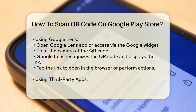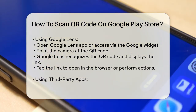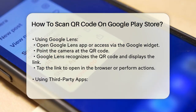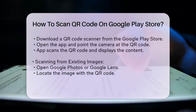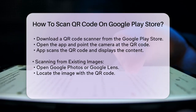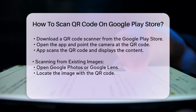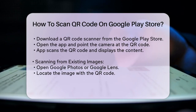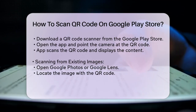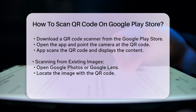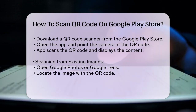Using third-party apps. If your device doesn't have Google Lens or if you prefer a different app, you can download a third-party QR code scanner from the Google Play Store. Download an app like QR Scanner, QR and Barcode Reader, or Trend Micro's Safe QR Code Reader. Open the app and point the camera at the QR code. The app will scan the QR code and display the content for you to view or interact with.